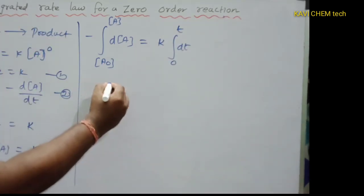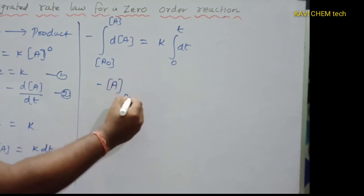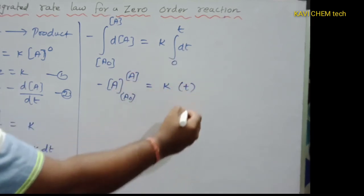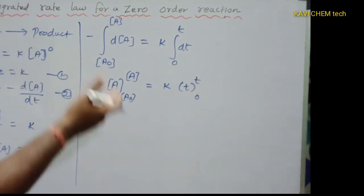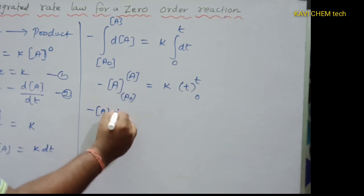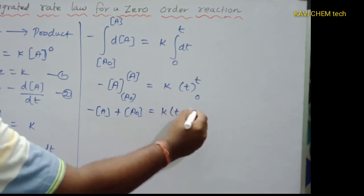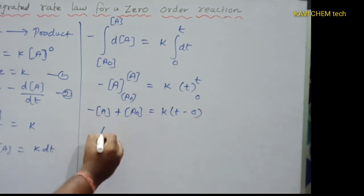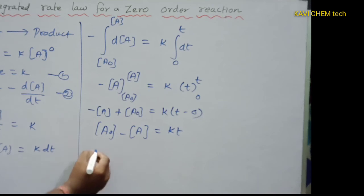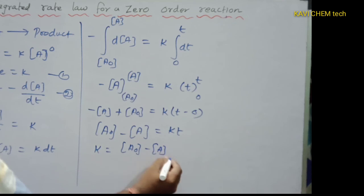When I integrate dA I get simply A. Substituting the limits, upper minus lower, we get minus A + A₀ = Kt − 0. So A₀ − A = Kt, which gives K = ([A₀] − [A]) / t. This is the rate constant for zero order reaction.